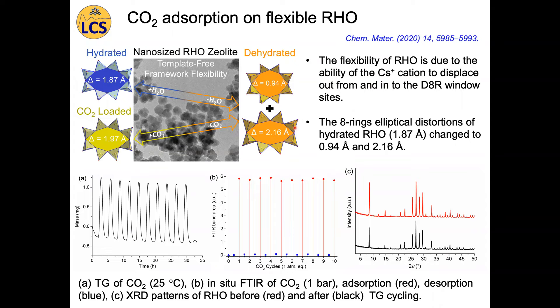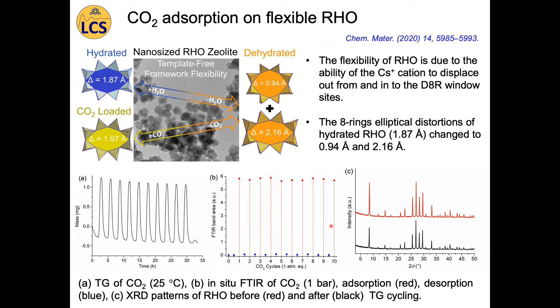The interest in this rho zeolite is its high selectivity for CO2 while rejecting methane. Thermogravimetric data shows that after 10 subsequent cycles of CO2 absorption and desorption, the capacity is almost fully preserved, no methane was absorbed in the rho nanoparticles, and the crystalline structure was fully preserved after 10 cycles.